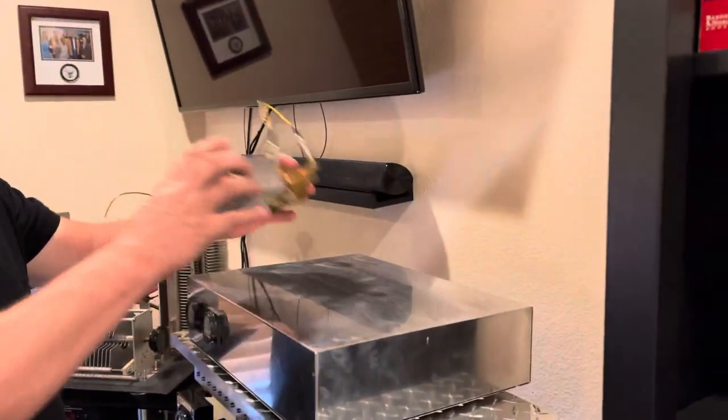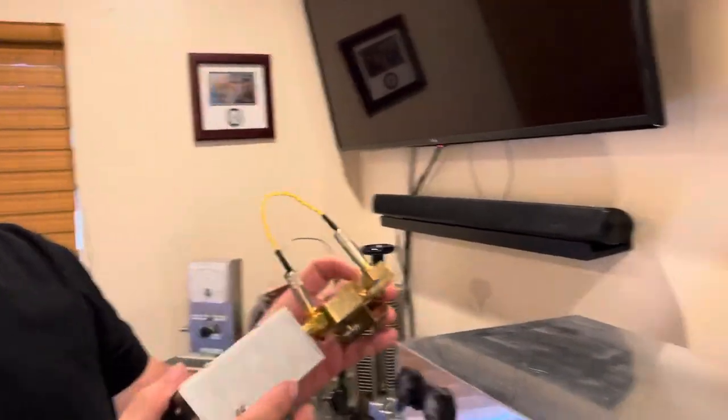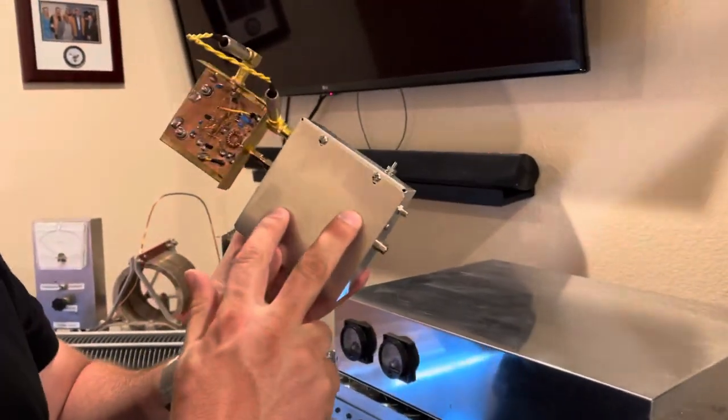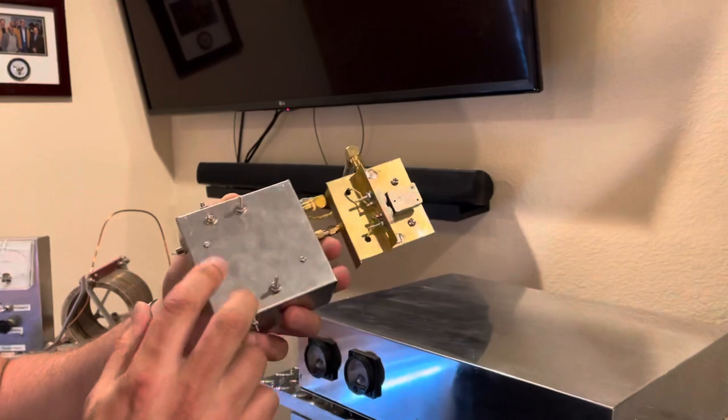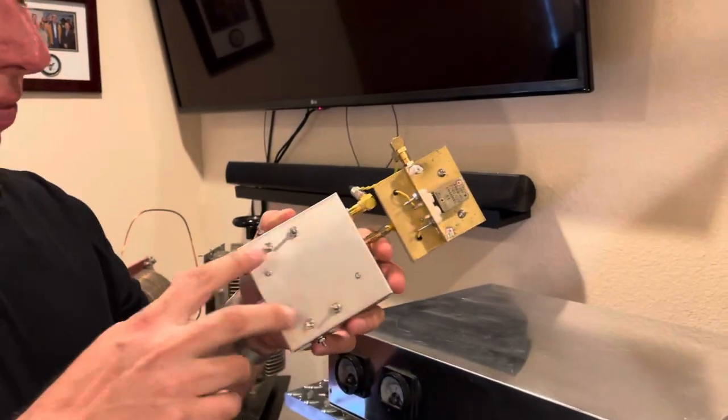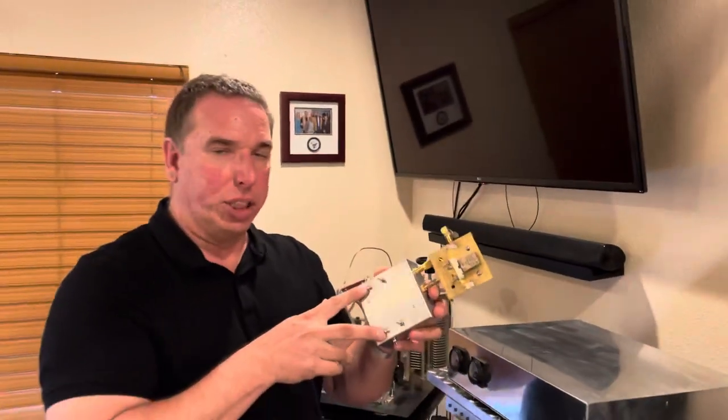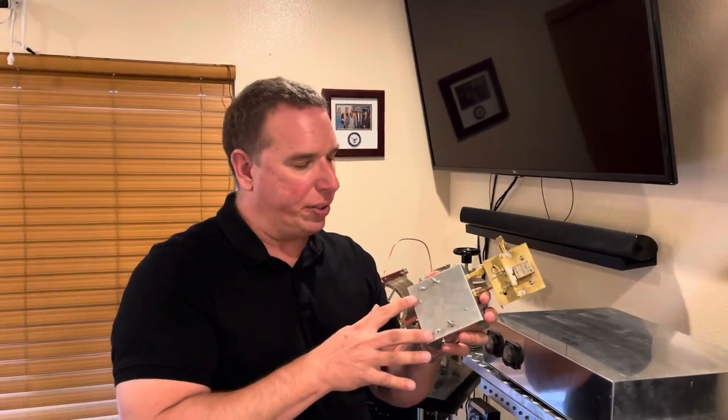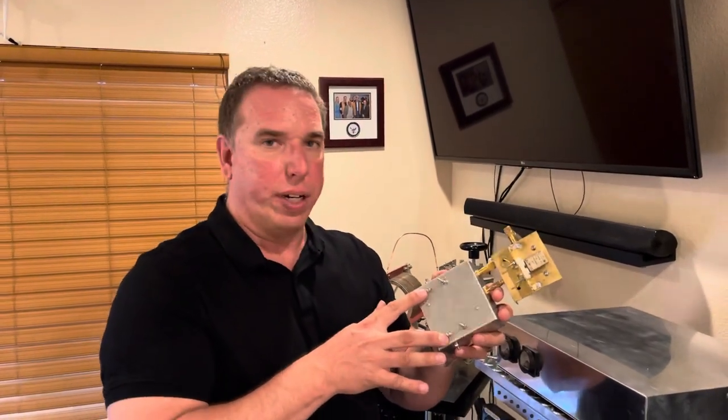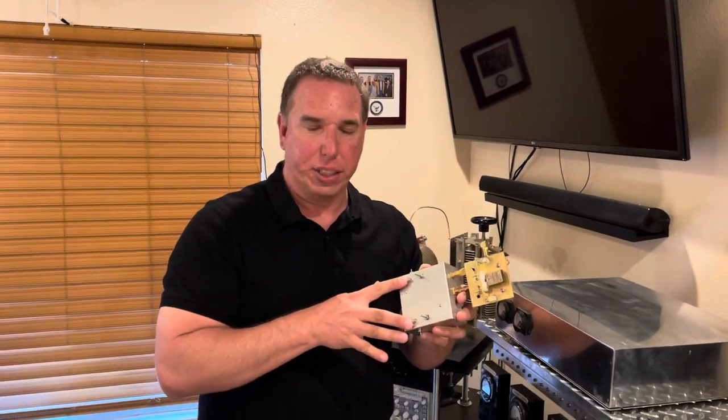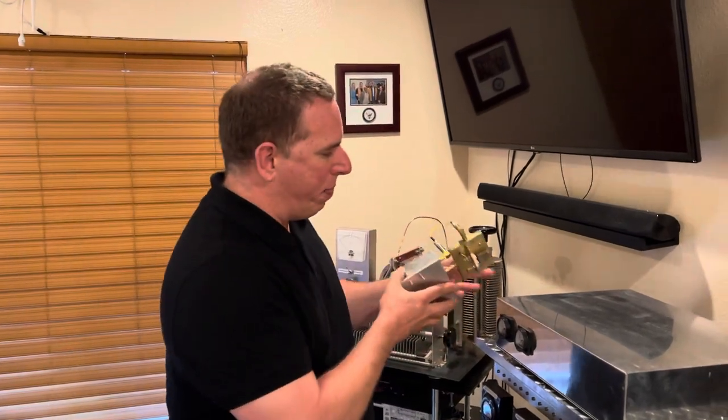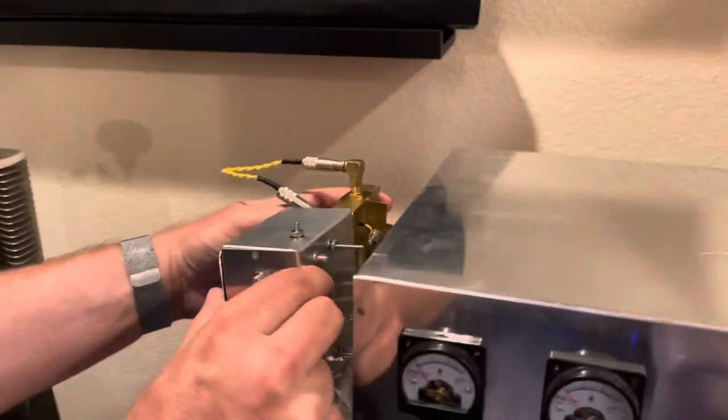Here's the crystal oscillator with the crystal. It drives the duty cycle adjust board which outputs two square waves that are 180 degrees out of phase with a duty cycle around 40 to 45 percent to drive the gates of the MOSFETs of the final amplifier.